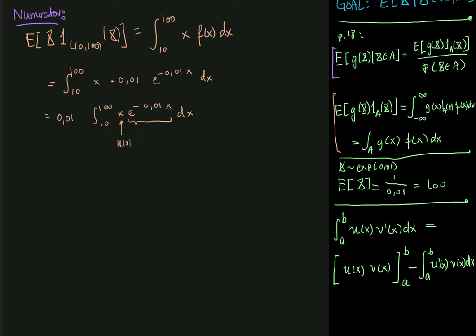And I let this thing here be my v prime. And the reason for that is because if I do this, then over on the other side, inside the integral, I will have u prime of x, which is just 1, which means then I can get rid of my x inside the integral, and that's always nice.